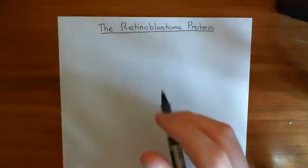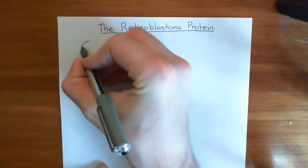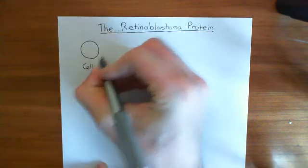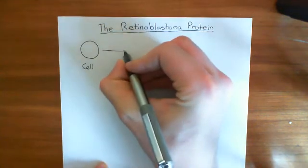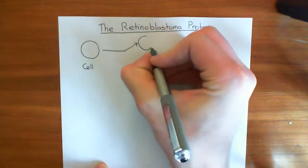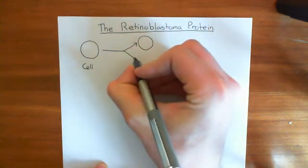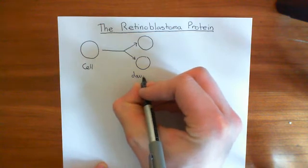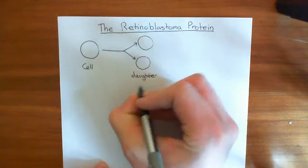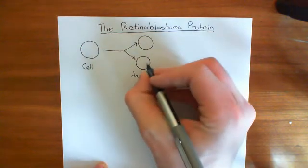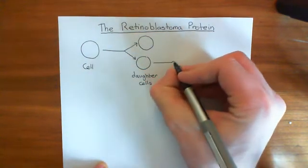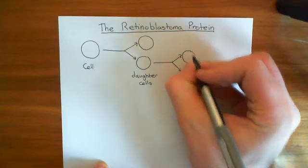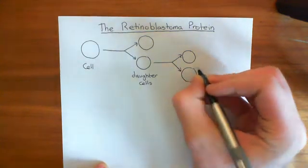Let's begin with the cell cycle. We have a cell here, and the cell is going to divide into two daughter cells, which are genetically identical. That process is known as the cell cycle. It's called a cycle because those two daughter cells can go through the process again, so it's a process that goes round and round.